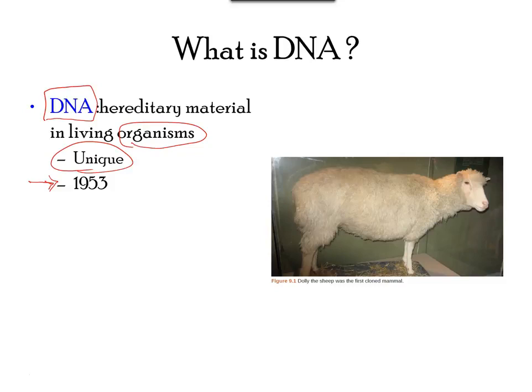DNA is the genetic material that is passed from parent to offspring for all life on Earth. The advent of molecular genetics has enabled us to understand the history of life and the relationship between living things. It also helped us to understand the process of evolution. Thousands of species have been sequenced for their genome.